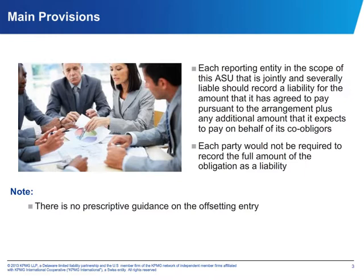Another important part of the guidance is that the staff did not provide any prescriptive requirements when evaluating the offsetting entry to these obligations. The offsetting entry will need to be evaluated on a case-by-case basis because it will be facts and circumstance specific. However, the ASU does provide examples of potential offsetting entries. These include cash in the case of a debt arrangement, expense for a legal settlement, a receivable for a contractual right — though you need to assess that receivable for impairment — or potentially an equity transaction for entities under common control.